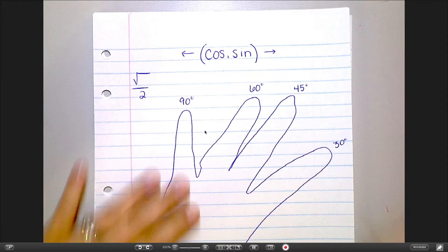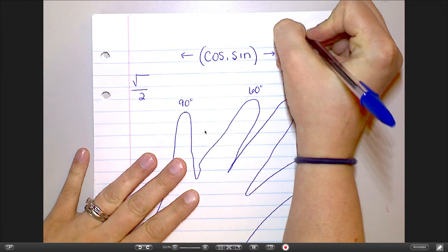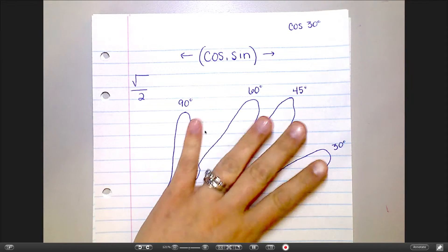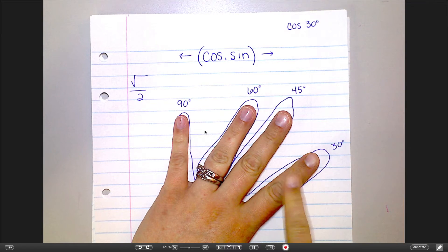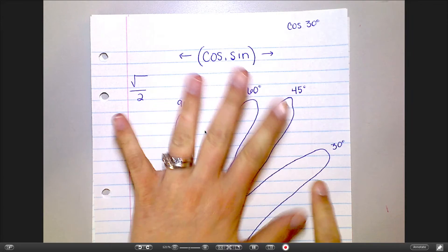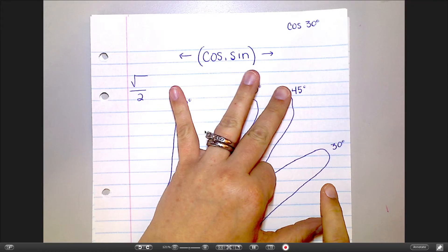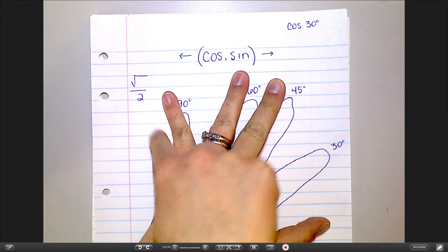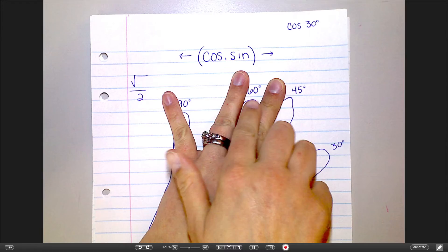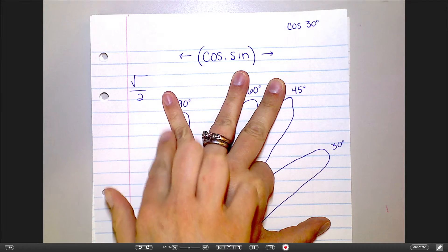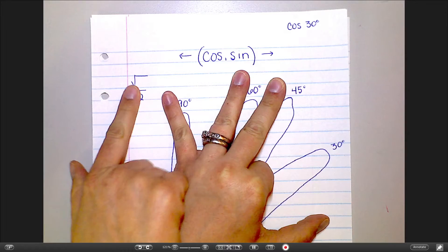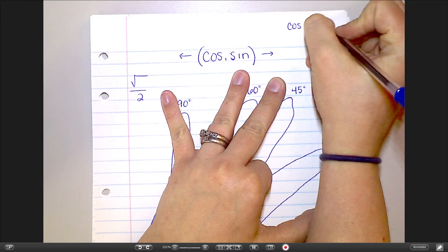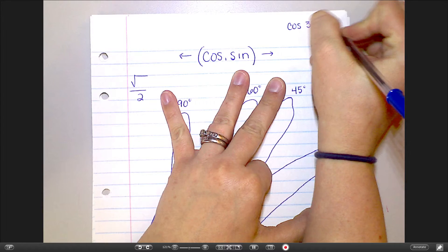So, let's say you were trying to find cosine of 30. So, taking a look at your hand, here's your 30 degrees. So, I'm going to put that finger down, and cosine, we said, was on the left. Notice how I have three fingers now on the left from where I put my finger down? So, that would be square root of 3 over 2. Remember, everything is square root over 2. So, cosine of 30 is square root of 3 over 2.